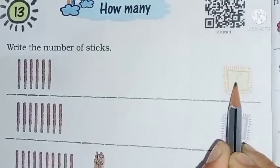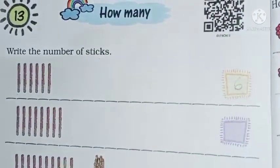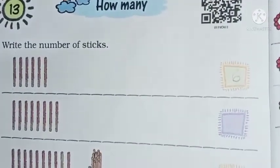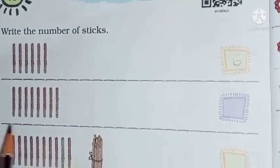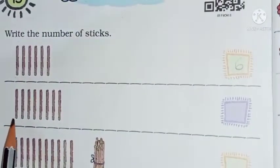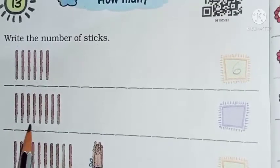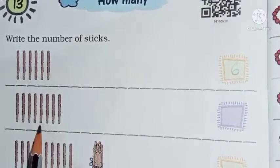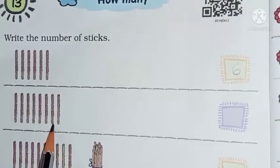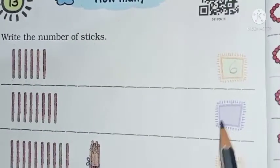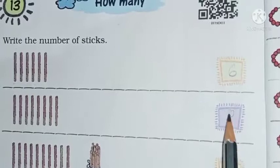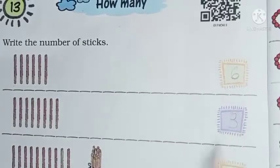So children, this is 6. We will write 6 in the box. Next, we will count: 1, 2, 3, 4, 5, 6, 7, 8. So here we write how many? 8.